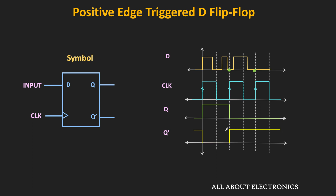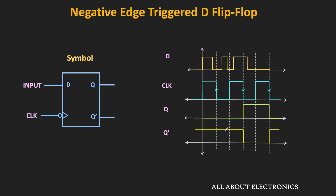Similarly, for the same input signal, let us see the output of the negative edge-triggered flip-flop. Initially, this Q output is equal to 0, and the flip-flop will hold its present state until the next falling edge. At the first falling edge, the D input is equal to 0, and therefore Q output will remain in the same state until the next falling edge. At the next falling edge, the D input is equal to 1, and therefore this Q output will also become 1.